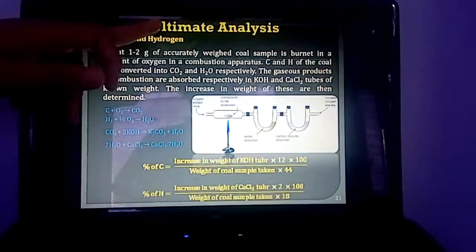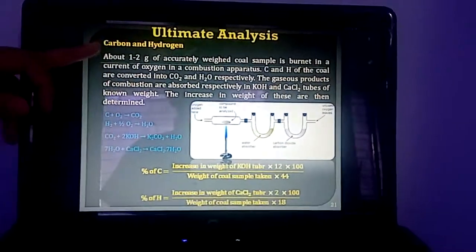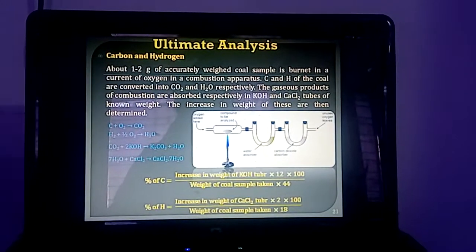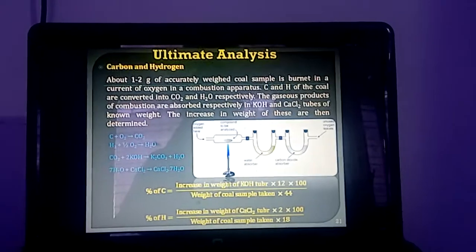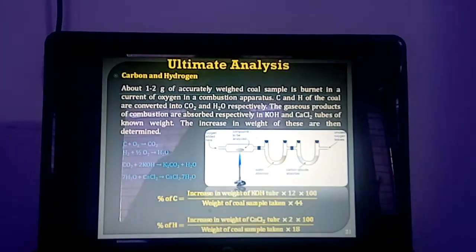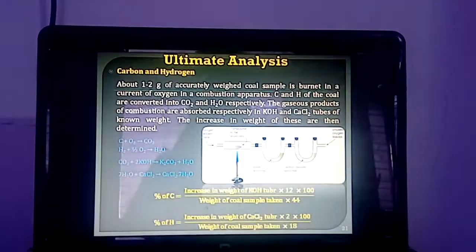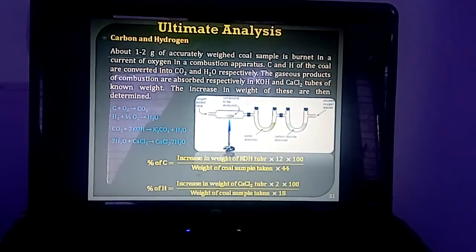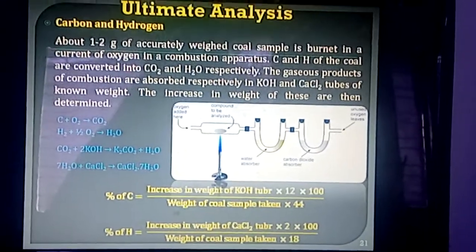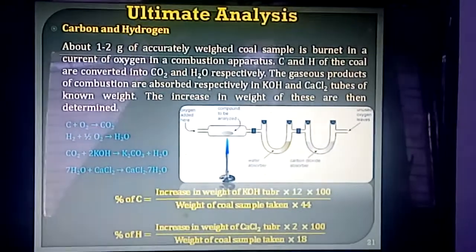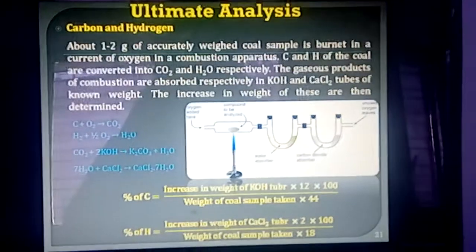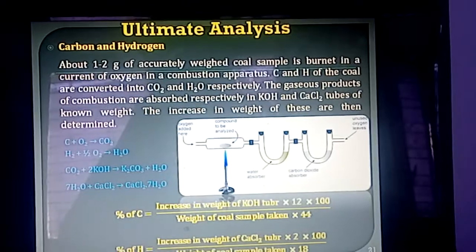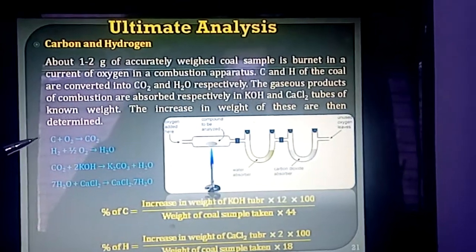In the ultimate analysis method, the first method is for determination of carbon and hydrogen present in the coal sample. When the coal sample containing carbon and hydrogen is burned in the presence of oxygen, carbon is oxidized to carbon dioxide.